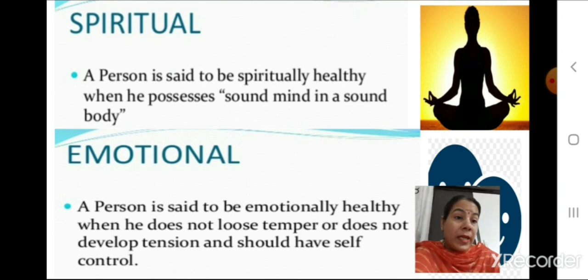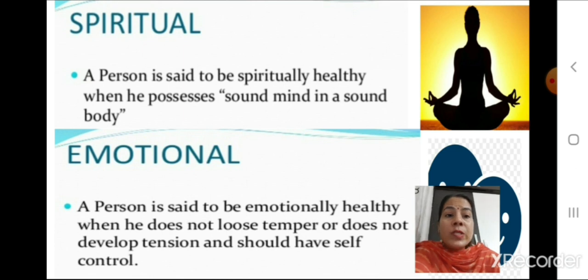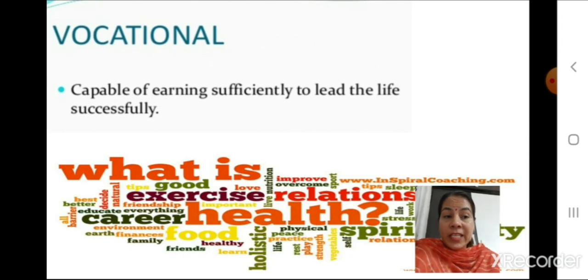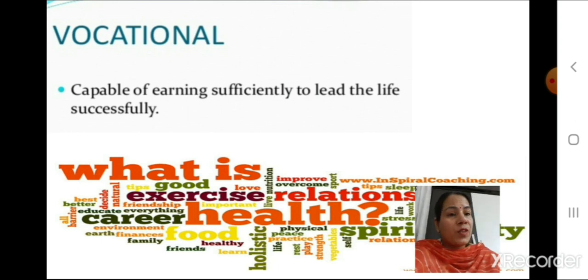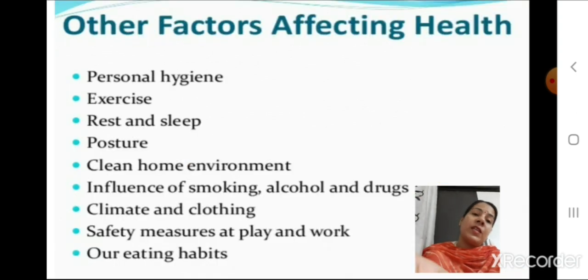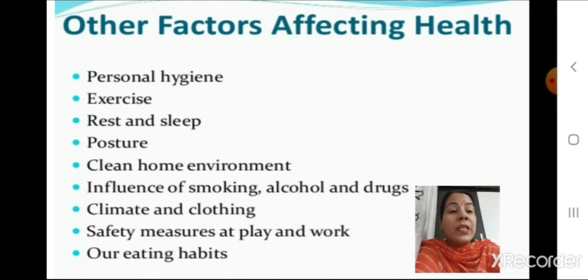Next is emotional health — a person is emotionally healthy when they do not lose their temper, do not develop tension, and have self-control. There is also vocational health, where a person is capable of earning sufficiently to lead life successfully and bear the expenses of themselves and their family members.